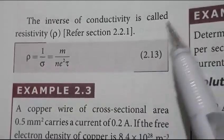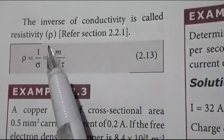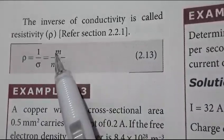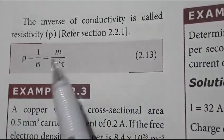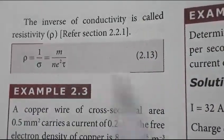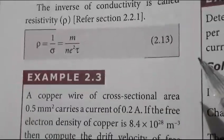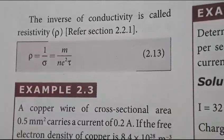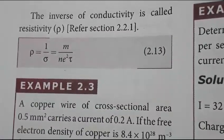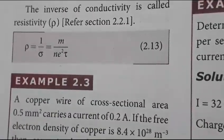The inverse of conductivity is resistivity: rho equals 1 by sigma. Thank you friends.